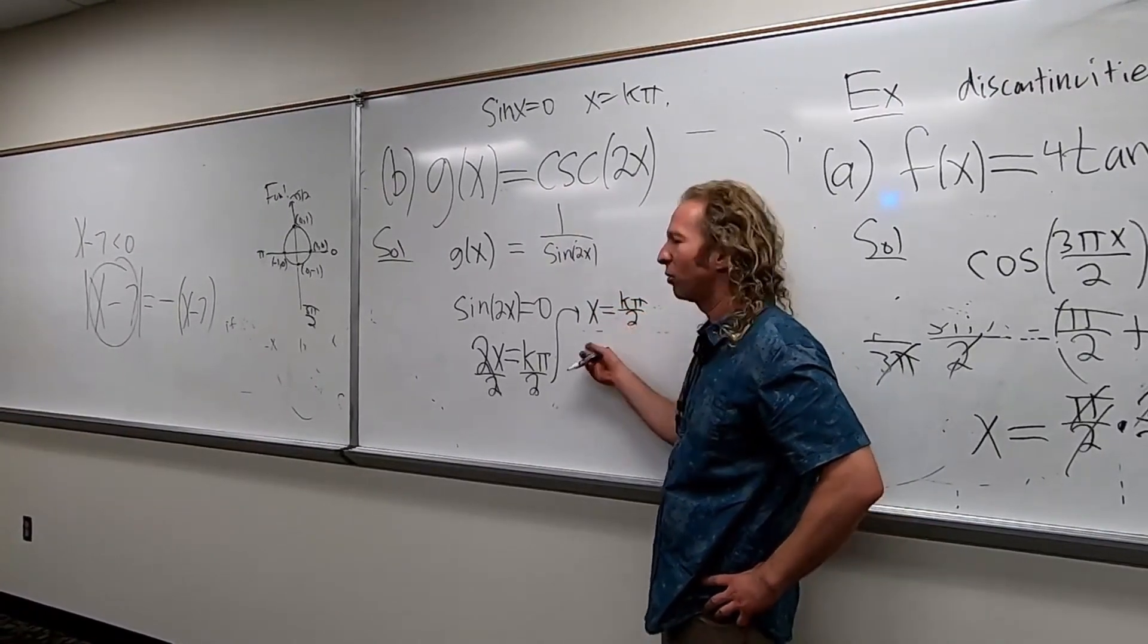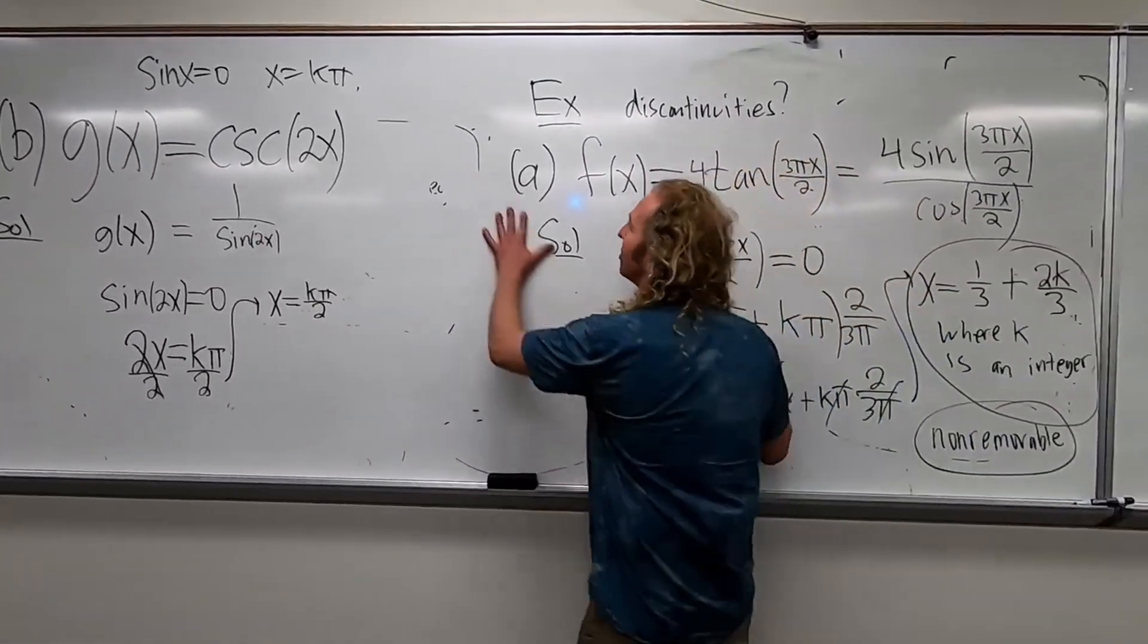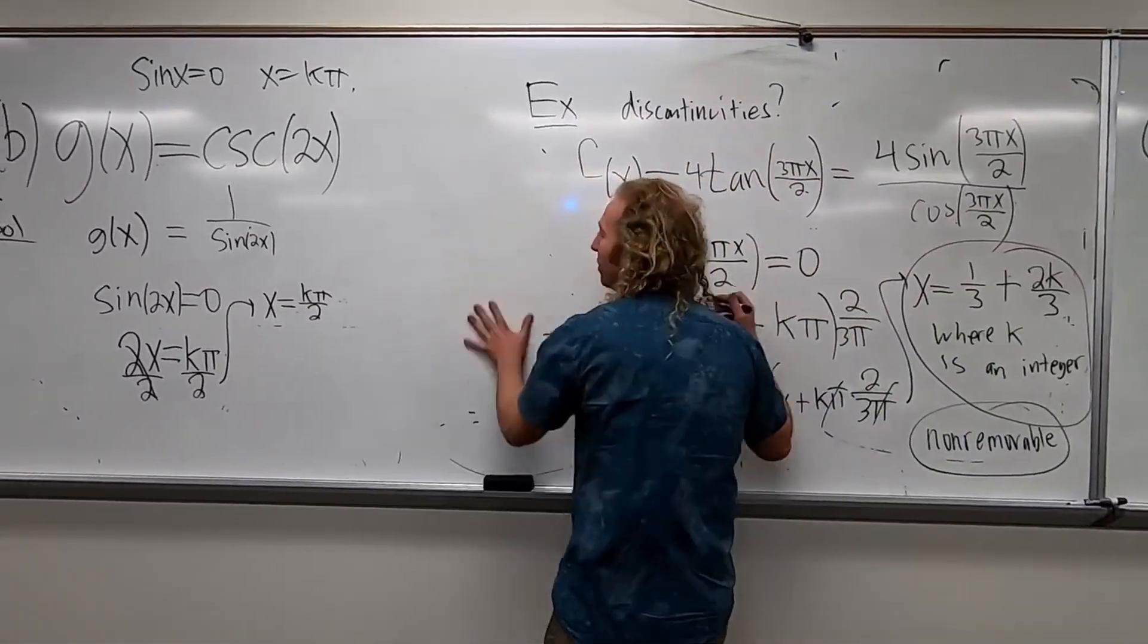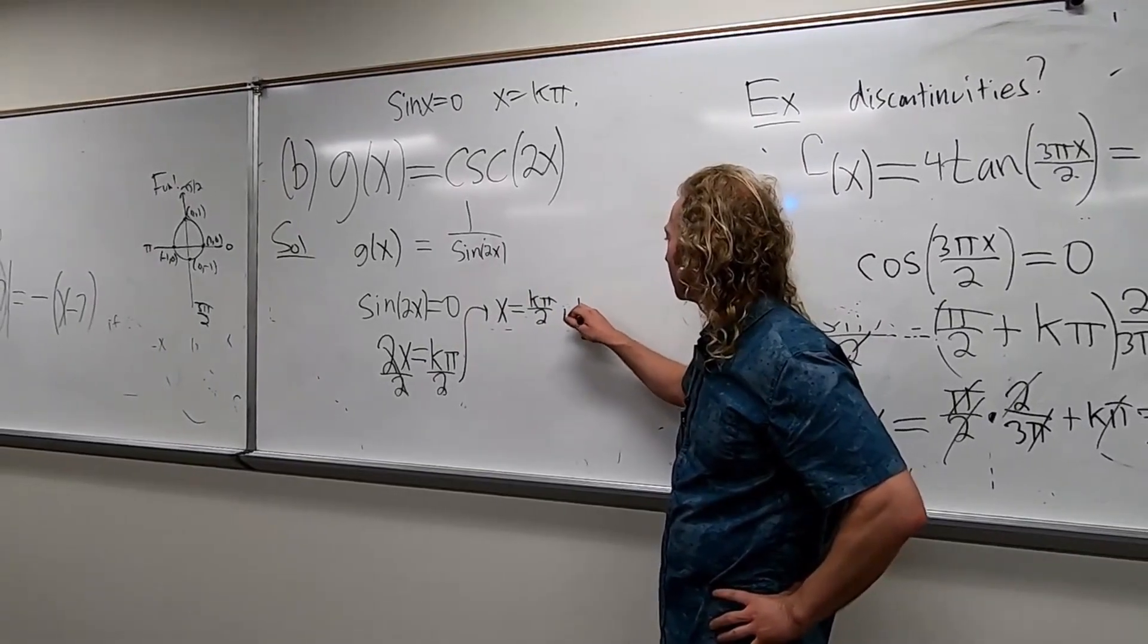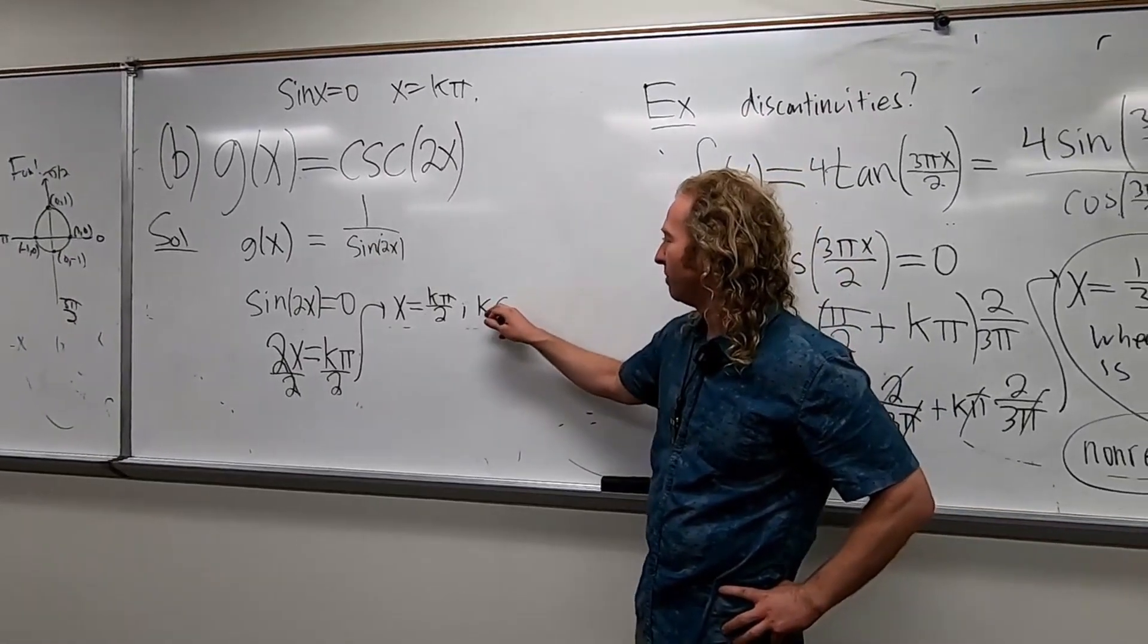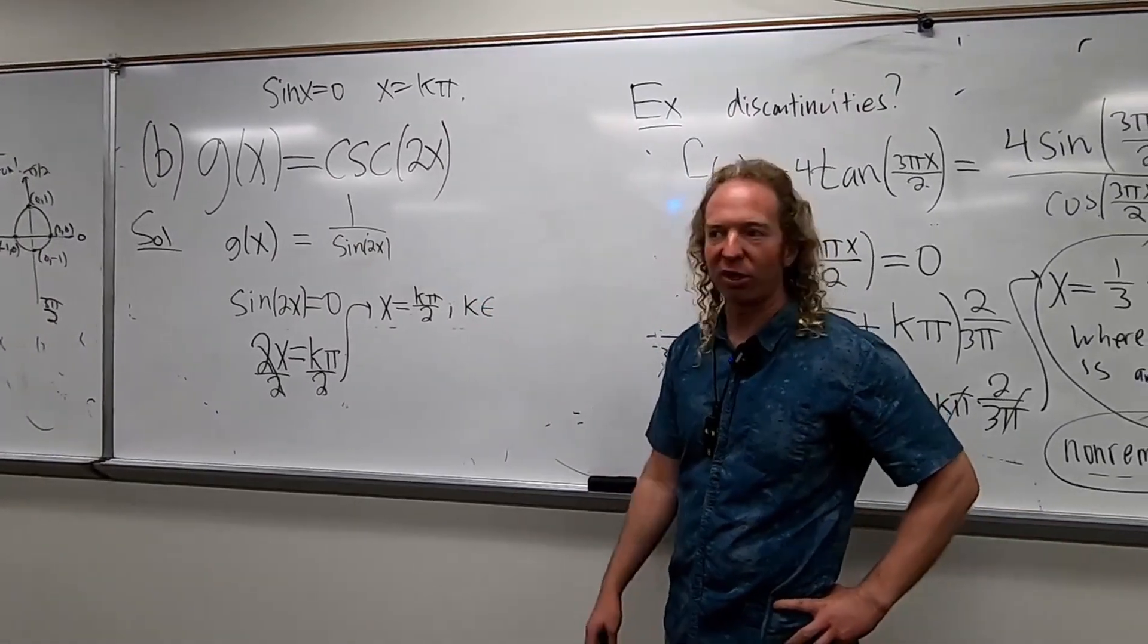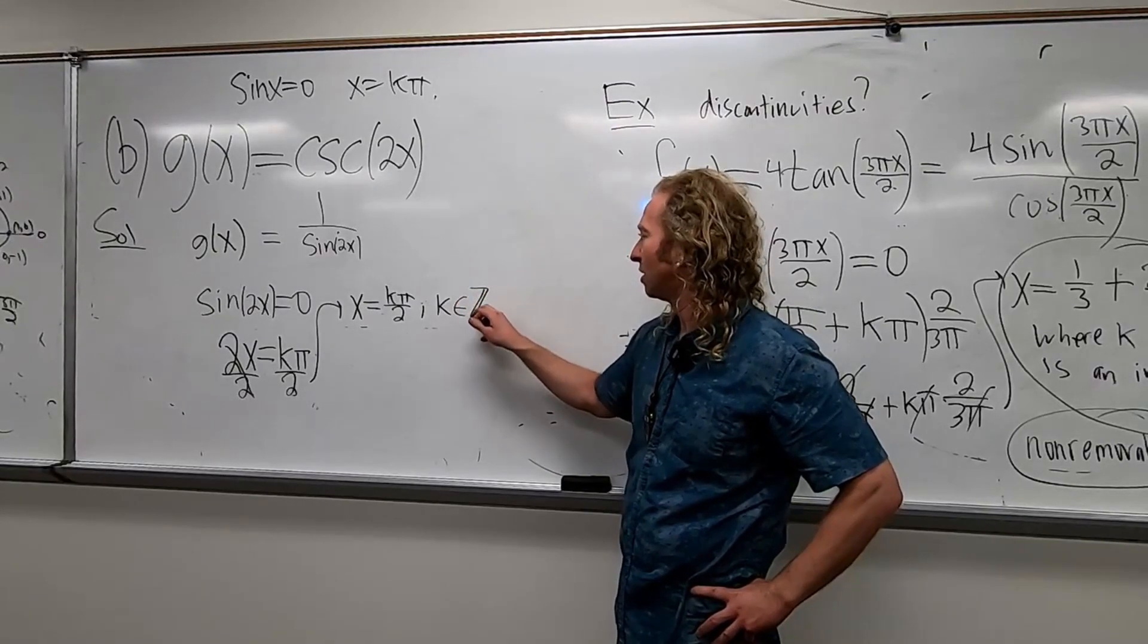Now I had mentioned that you're supposed to say where k is an integer. I'll show you a shortcut. Why not? You're supposed to learn stuff. It's college. So you can do the following. You can say, put a comma and then just say k. And then you do this symbol here like this. It means is an element of or belongs to. And then you draw this fancy z like that.